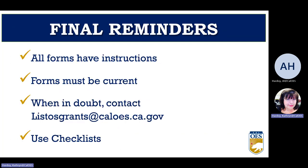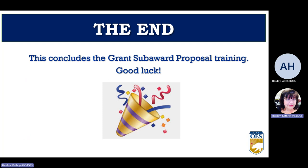We just spent a significant amount of time talking about the nine required forms for every request for proposal. Sometimes additional forms may apply — be sure to check part five of your request for proposal to find out. Some final things to remember: all forms have instructions; use the forms on the website as those will be the most current version; the checklist that comes with the RFP will tell you which forms are required; and email listosgrants@caloes.ca.gov if you have questions — we are here to help you. This concludes the grant subaward proposal training. Thank you for your time.